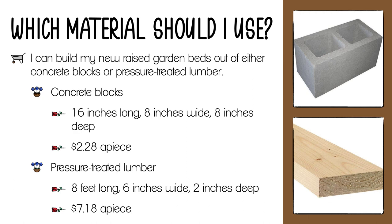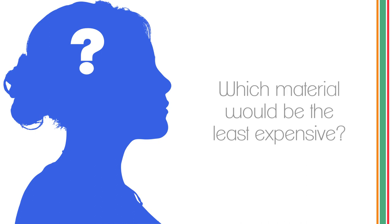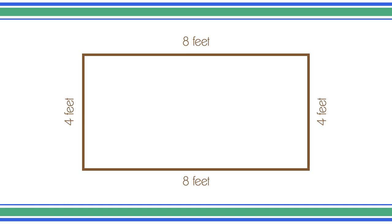Pressure-treated lumber would be my other option — specifically I was looking at eight-foot-long two-by-sixes, so six inches wide and two inches deep. Those sell for $7.18 a piece. Now on the surface the concrete blocks are cheaper, but obviously I need to figure out how much it's going to cost to build an entire bed. Are the concrete blocks actually going to remain cheaper than the wood? So our first question: which material would actually be the least expensive? We're going to look at the price per just one bed — eight feet long, four feet wide, one foot deep.